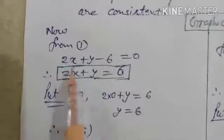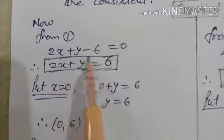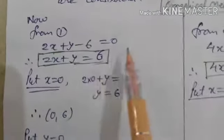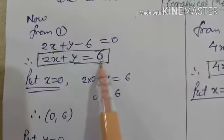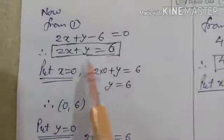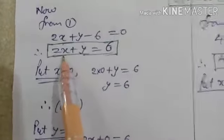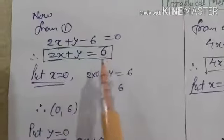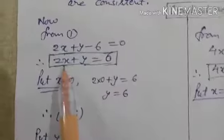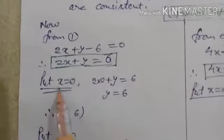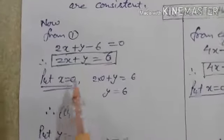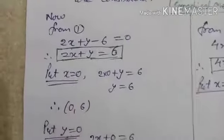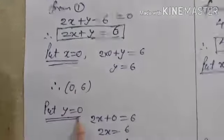Equation number 1 is 2x plus y minus 6 equal to 0. Transferring minus 6 to the right side makes it positive, so our equation becomes 2x plus y equal to 6. First, put x equal to 0 and find the value of y. Then put y equal to 0 and find the value of x.